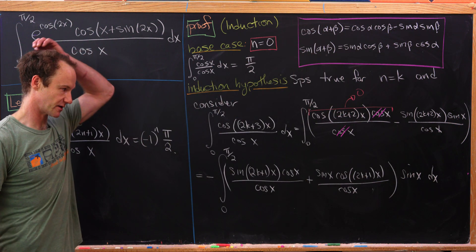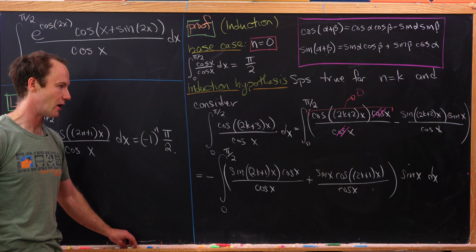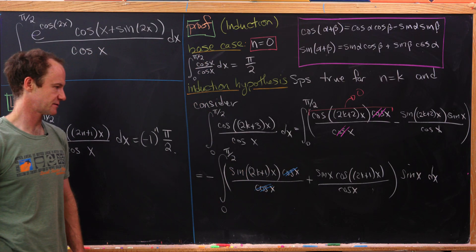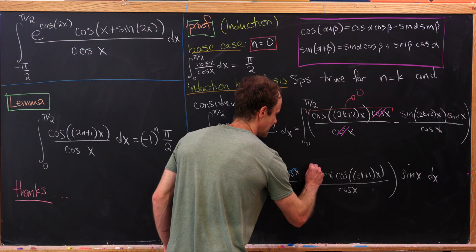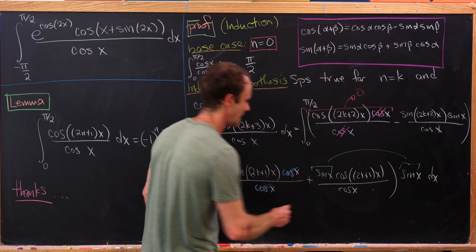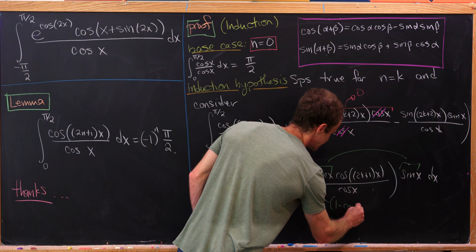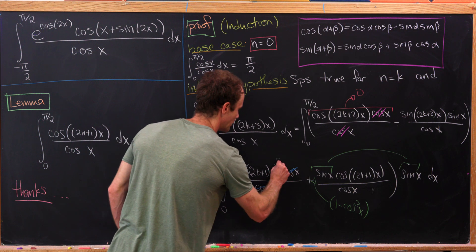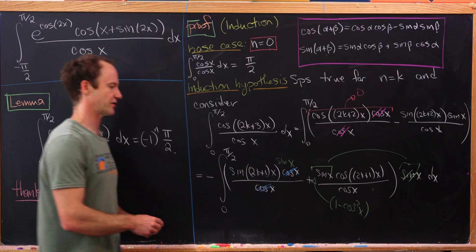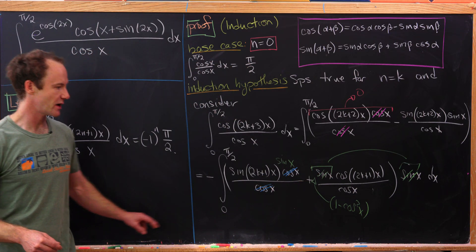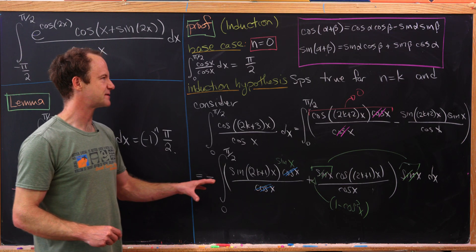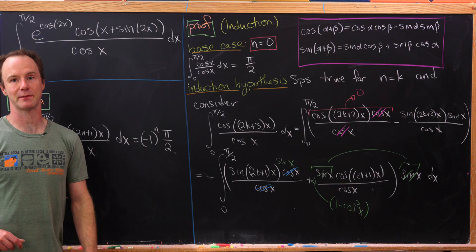Now let's see what simplification occurs. The cosine of x cancels, and sine of x times sine of x gives us sine squared. We rewrite sine squared as 1 minus cosine squared using the Pythagorean trig identity, and multiply the sine of x through, getting rid of those individual sine of x terms.